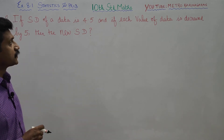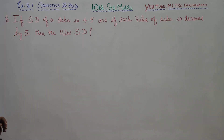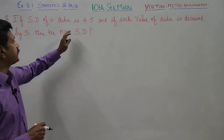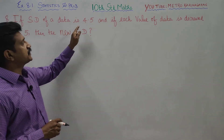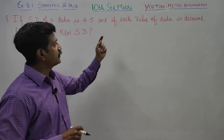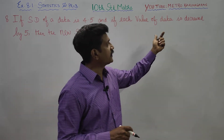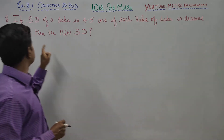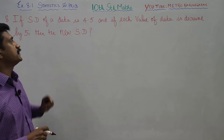Dear 10th Standard Students, I am Metro Karanagaran. In exercise number 8.1, sum number 8, if the standard deviation of the data is 4.5 and if each value of the data is decreased by 5, then find the new standard deviation.